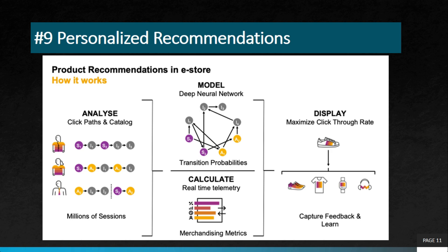The next project is personalized recommendations. Every online business uses personalized recommendations — whatever you buy on Myntra or Amazon, you see a list of products recommended based on your buying habits. SAP Marketing Cloud uses machine learning to analyze customer data and provide personalized product recommendations, which can increase sales and customer loyalty.